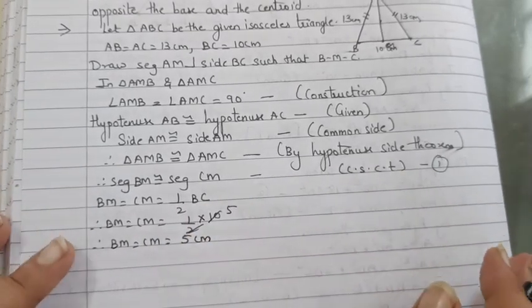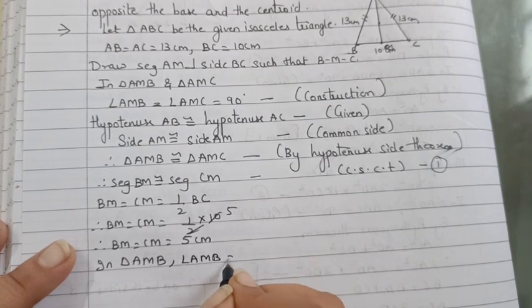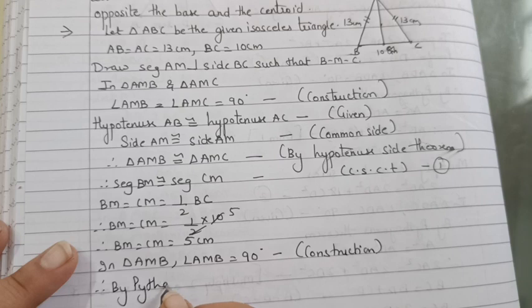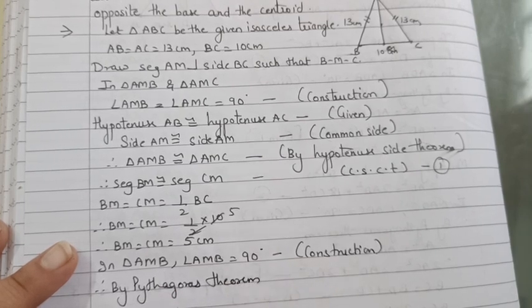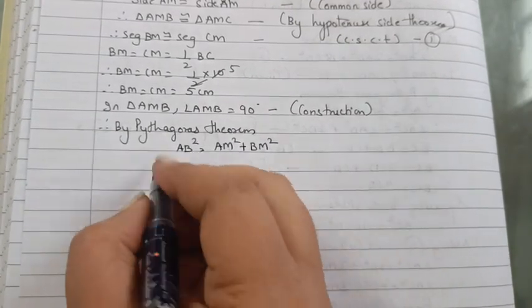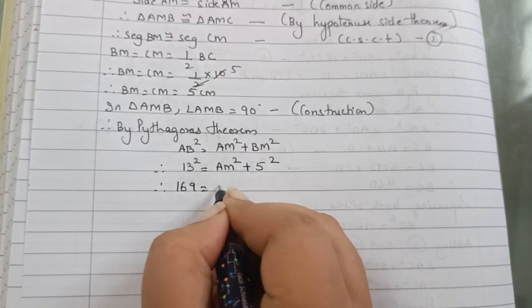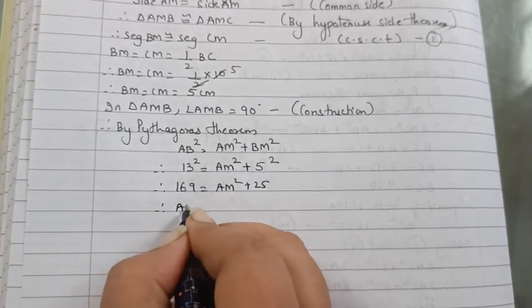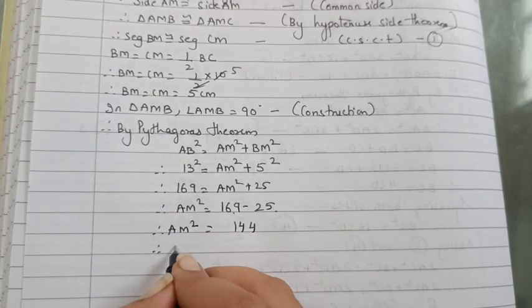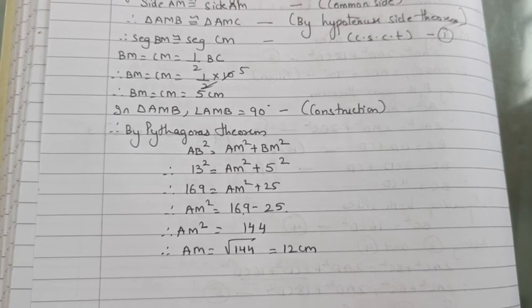So BM and CM equal half of 10, that's 5 cm. Therefore BM equals CM equals 5 cm. Now in triangle AMB, angle AMB is equal to 90 degree by construction. So therefore by Pythagoras theorem, AB² is equal to AM² plus BM². 13² is 169 equal AM² plus 25. Therefore AM² equal 144. Therefore AM equal 12 cm.